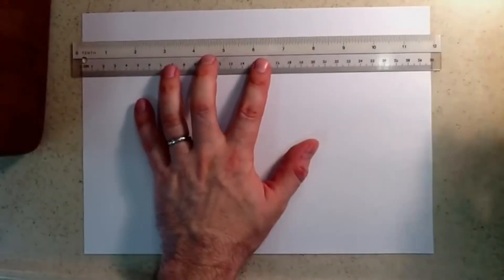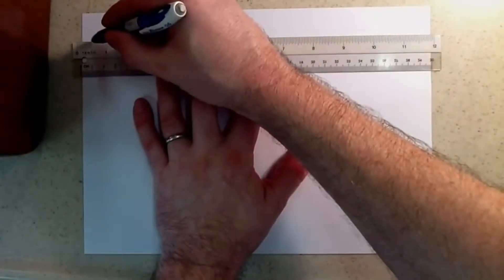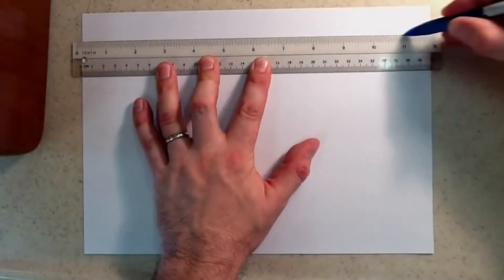Today's practical, we are looking at the reflection of light in a plain mirror. We start by drawing a straight line using a ruler. We then place the piece of paper on a cork board.